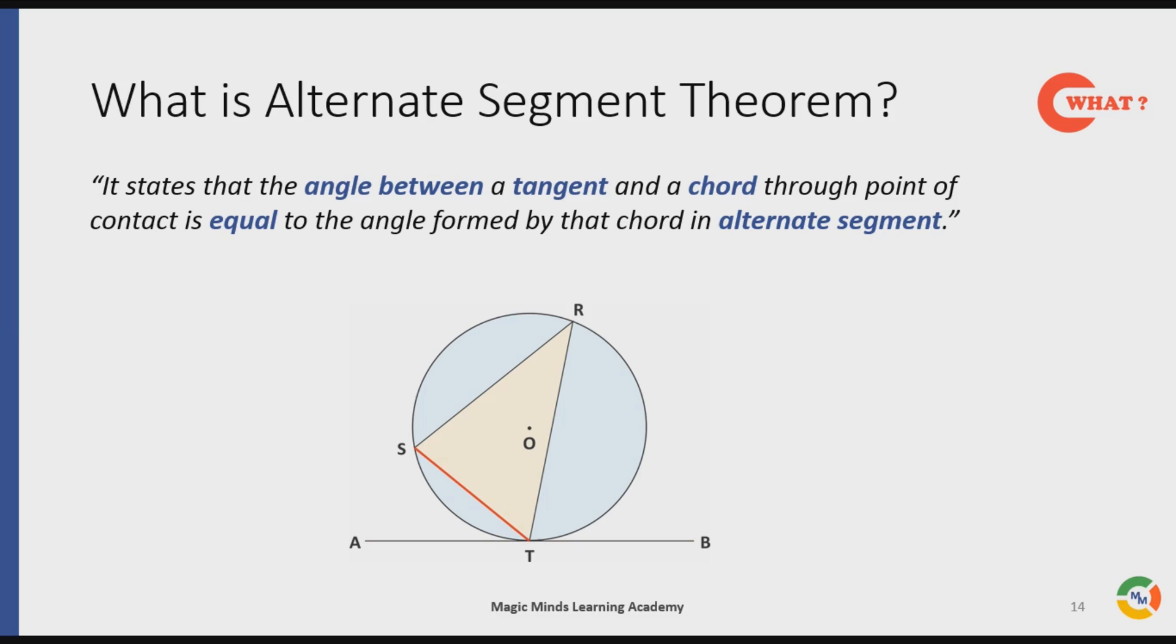This means angle ATS is equal to angle TRS. Hence by Alternate Segment Theorem we can say that angle BTR is equal to angle TSR and angle ATS is equal to angle TRS.